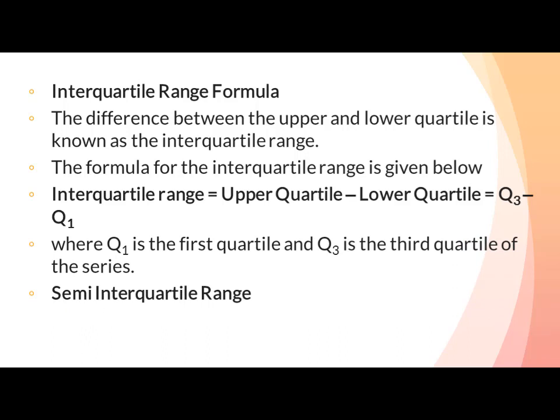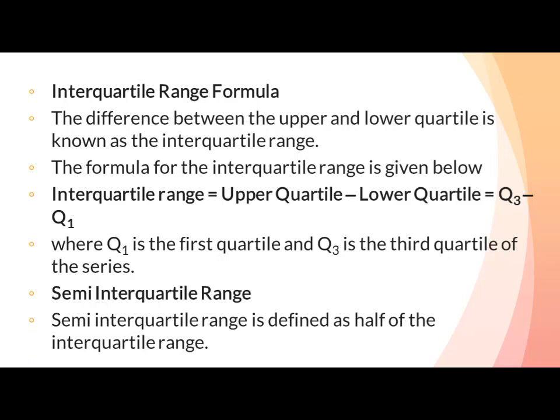Semi-interquartile range is defined as half of the interquartile range. Semi-interquartile range کو سادہ الفاظ میں اس طرح define کرتے ہیں کہ half of the interquartile range is the semi-interquartile range — مطلب کہ جب ہم interquartile range کو دو پر divide کرتے ہیں اور جو حاصل ہوتا ہے اس کو semi-interquartile range کہتے ہیں۔